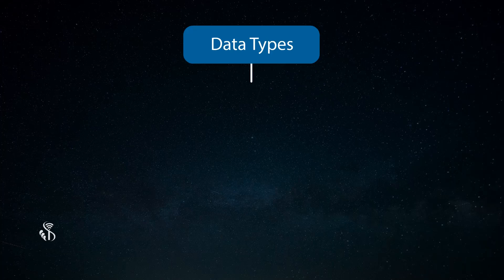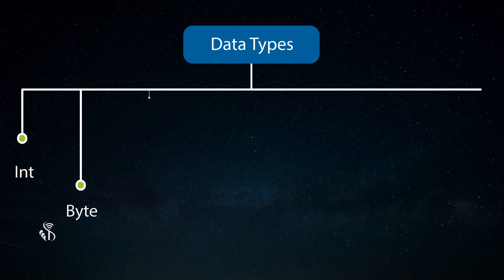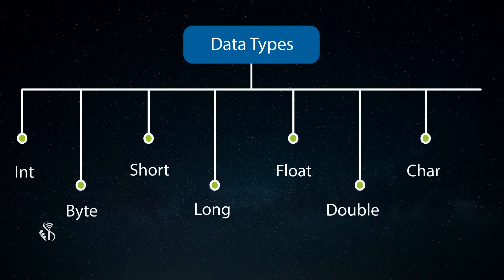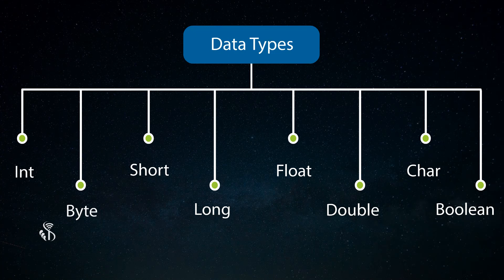The various data types which are available in Java programming language are Integer, Byte, Short, Long, Float, Double, Character, and Boolean. We will discuss each of the variables in detail in the next chapter.